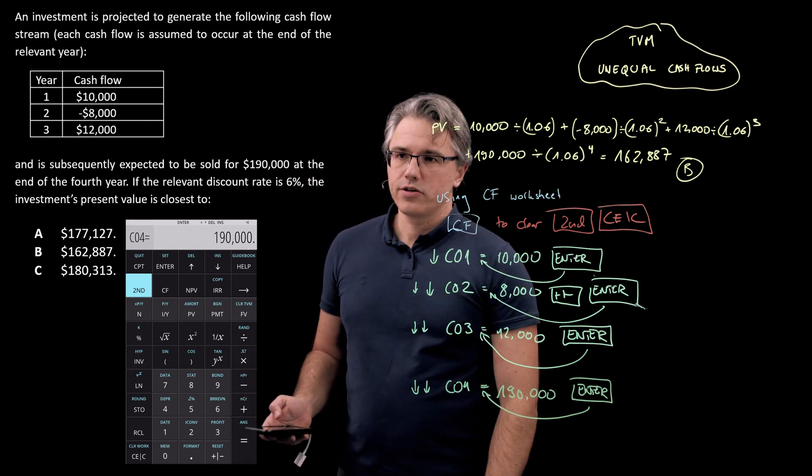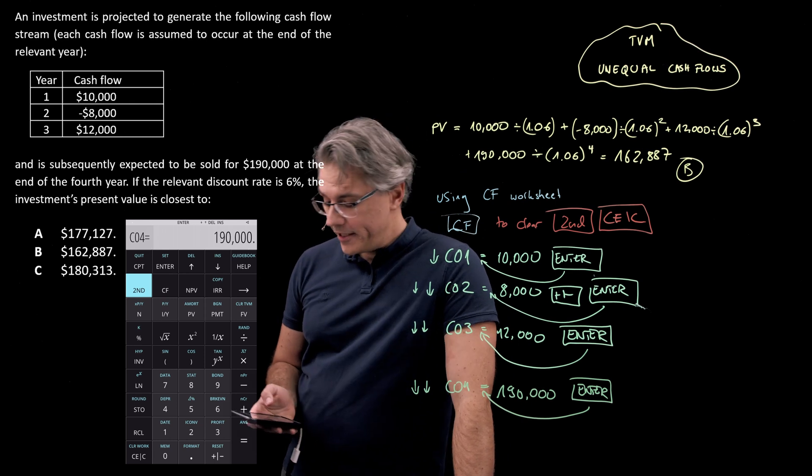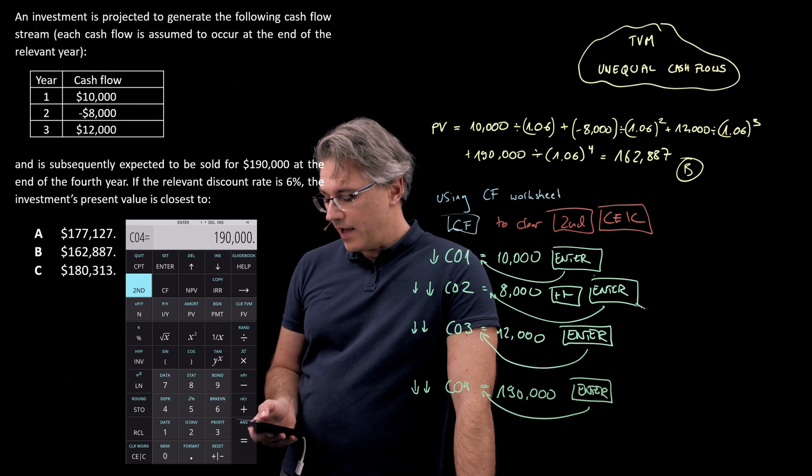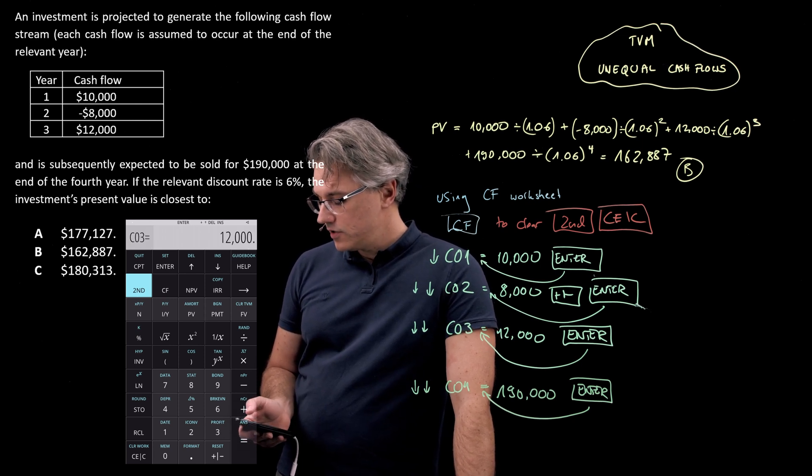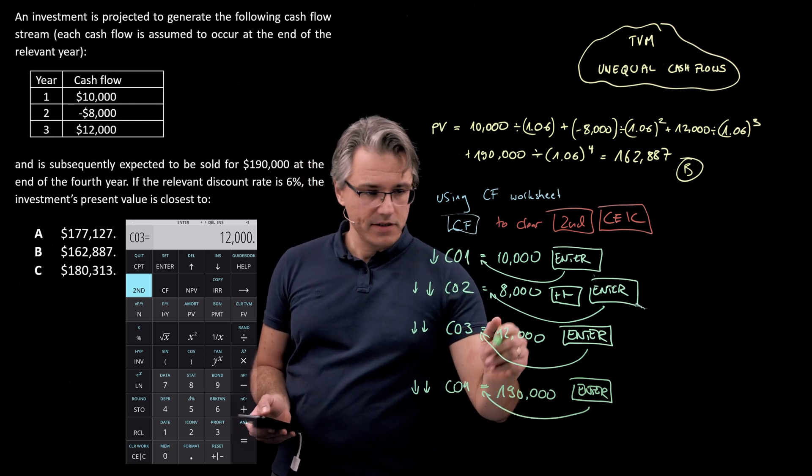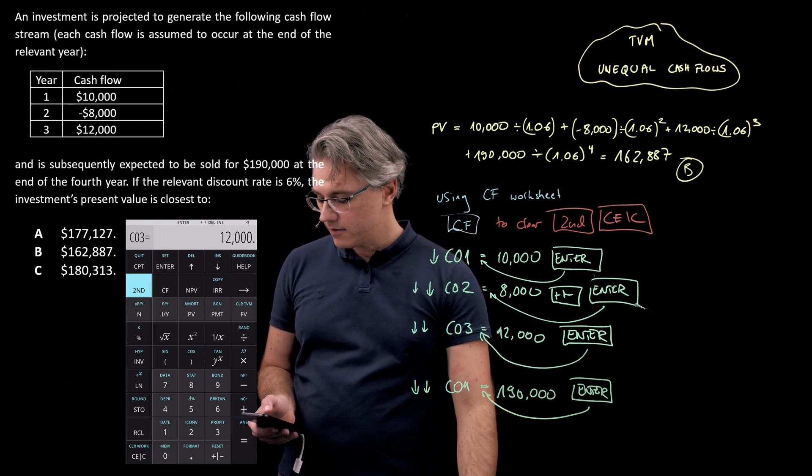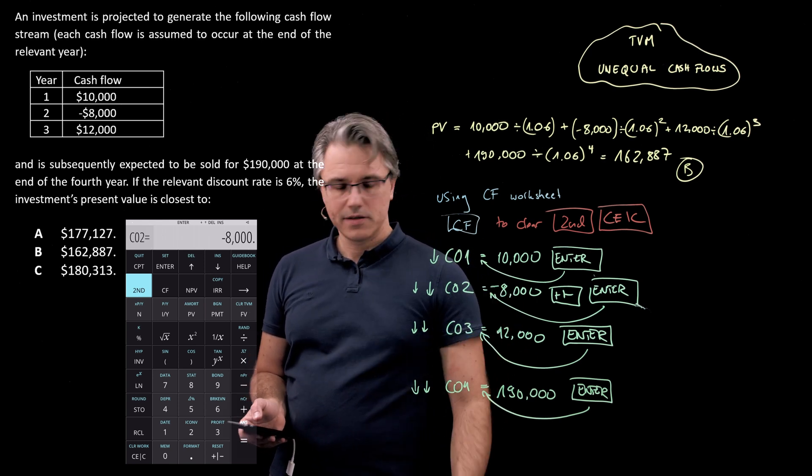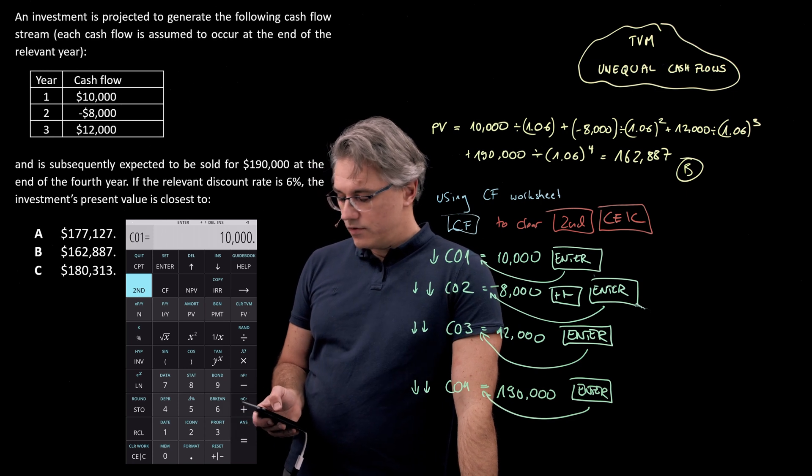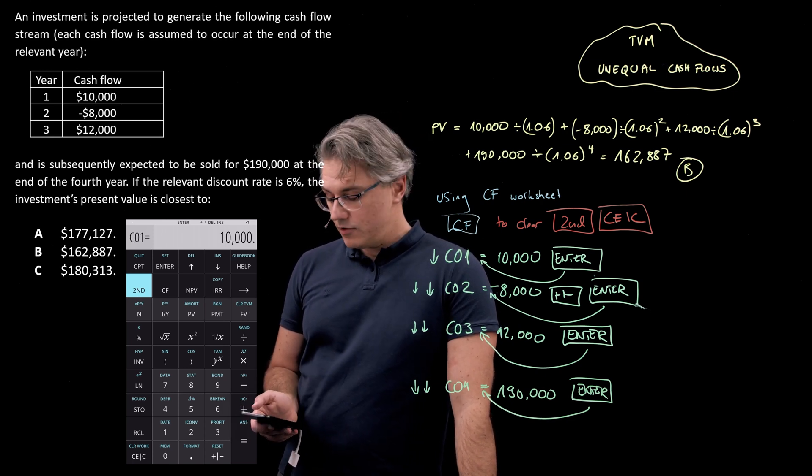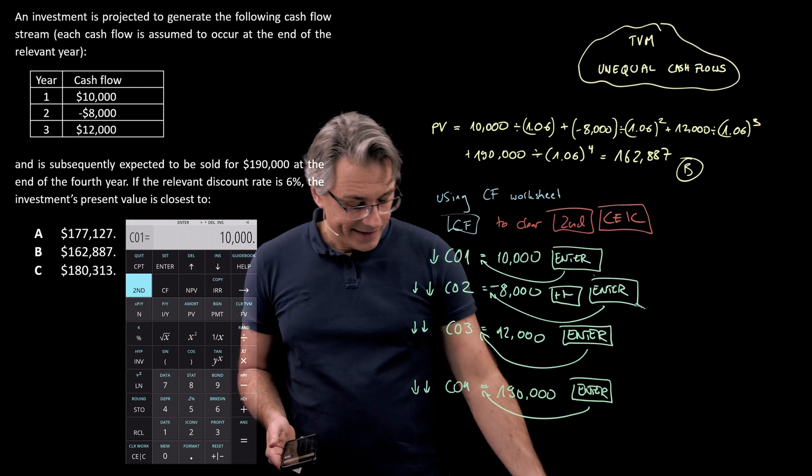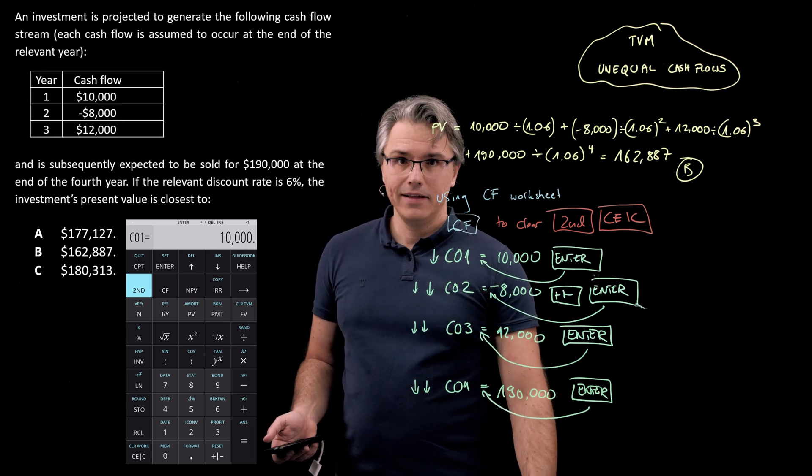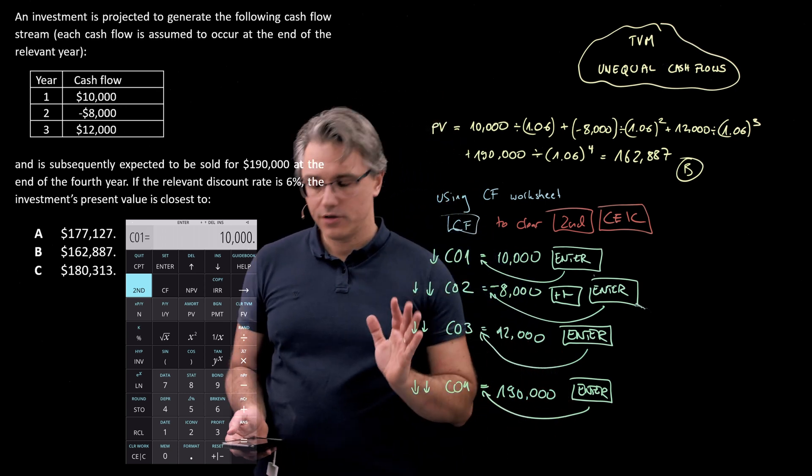The nice thing about the cash flow worksheet is you can review your inputs. So, what you can do is go up and down with the arrows. I'm going to go up just to see whether my previous inputs were entered correctly. This was 12,000. This was minus 8. OK, we wanted the minus here. That's fine. And this was 10,000. So, everything seems to be right. I'm happy with it.